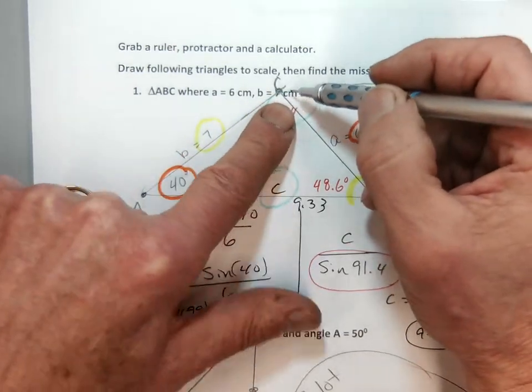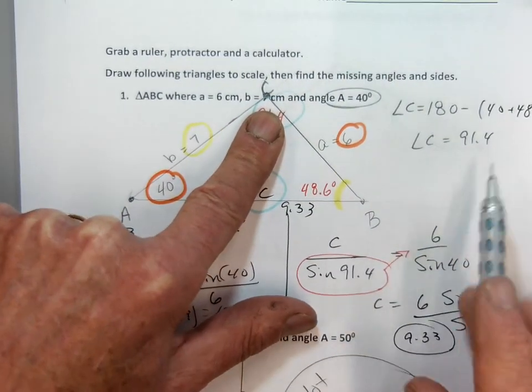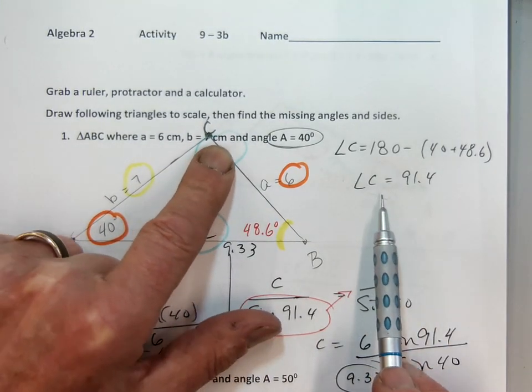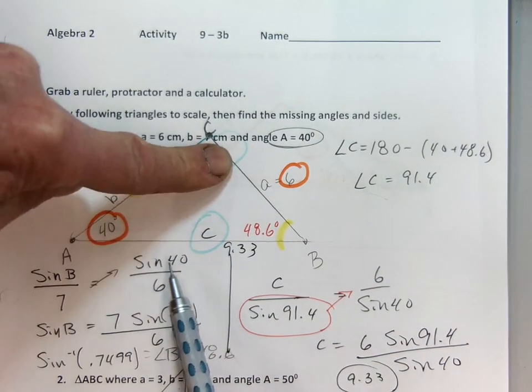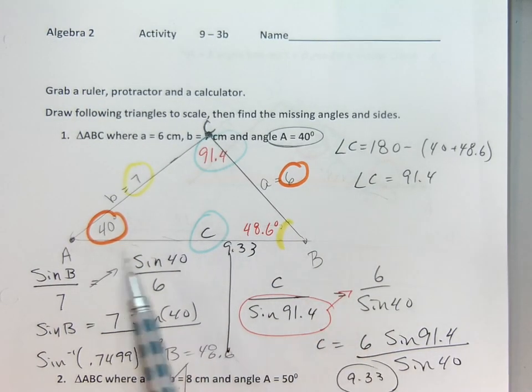I don't know angle C. Let's pretend I haven't found it yet, but I know there's 180 degrees in a triangle. So to find angle C, I just went 180 minus 40 plus 48 and I got it to be about 91.4.